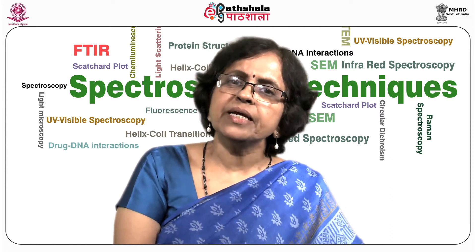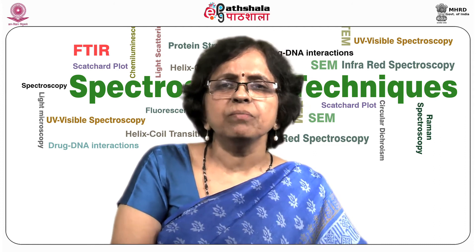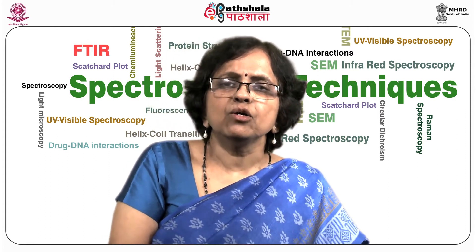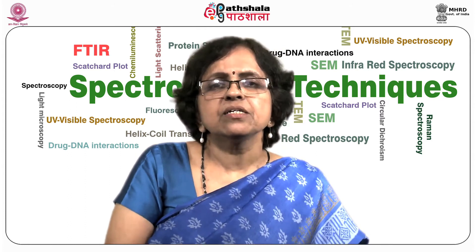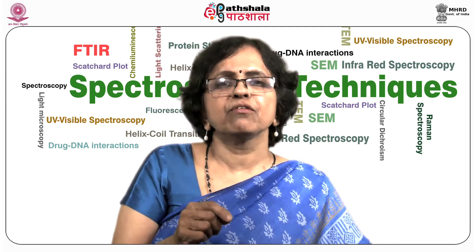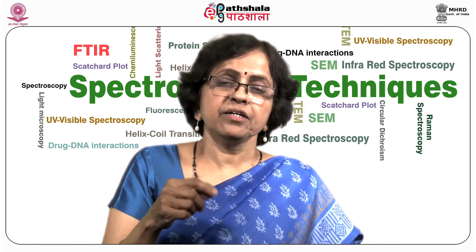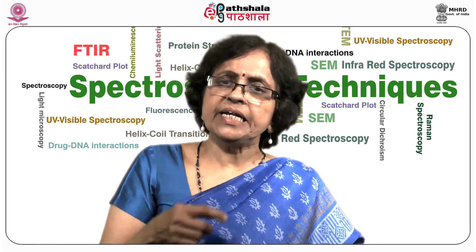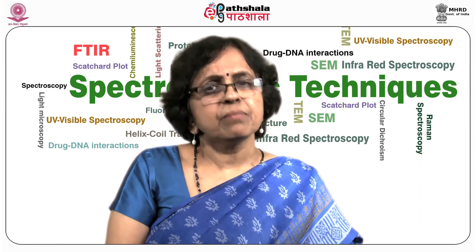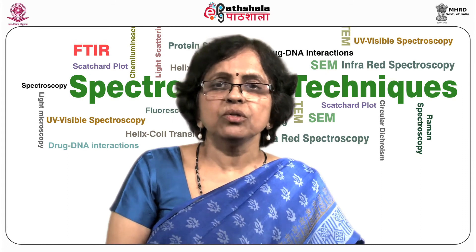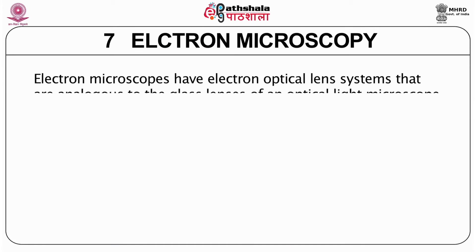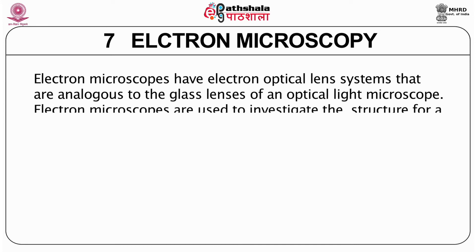Within electron microscopy, two different types evolved: transmission electron microscopy (TEM) and scanning electron microscopy (SEM). These will be covered in separate chapters in much more detail. The electron microscope uses electron optical lens systems analogous to the glass lenses of an optical light microscope, but uses electrons for much higher resolution.